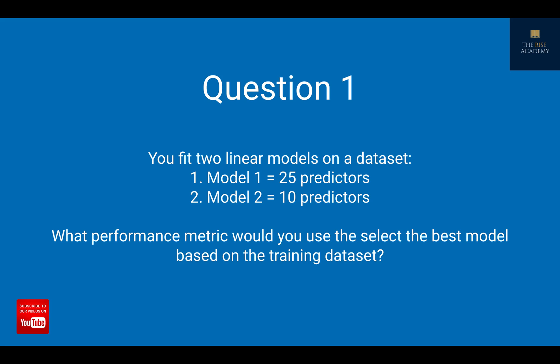Whenever we are building models, sometimes one model can have a lot of predictors and another model may have fewer predictors. Does the presence of a large number of predictors mean that one model is better than the other? This is kind of an open-ended question because many people can interpret it in different ways.